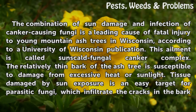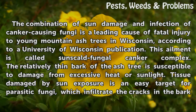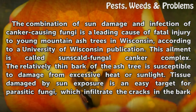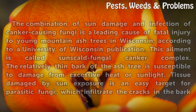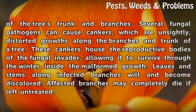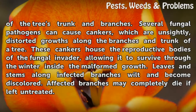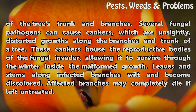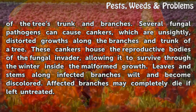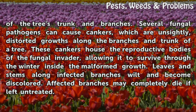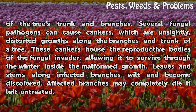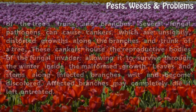The relatively thin bark of the ash tree is susceptible to damage from excessive heat or sunlight. Tissue damaged by sun exposure is an easy target for parasitic fungi, which infiltrate the cracks in the bark of the tree's trunk and branches. Several fungal pathogens can cause cankers, which are unsightly, distorted growths along the branches and trunk of the tree. These cankers house the reproductive bodies of the fungal invader, allowing it to survive through the winter inside the malformed growth. Leaves and stems along infected branches wilt and become discolored, and affected branches may completely die if left untreated.